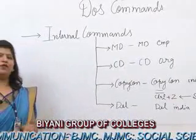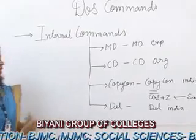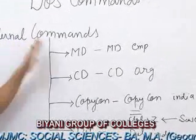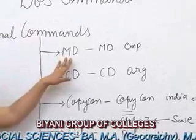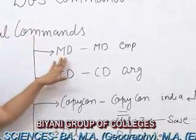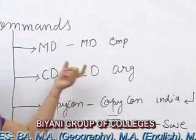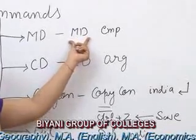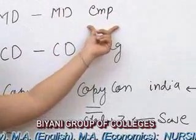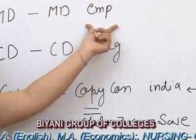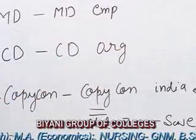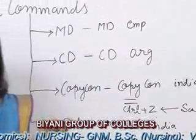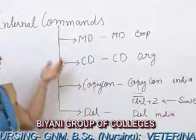Let us now understand what the internal commands are in depth. The first command is MD. MD stands for Make Directory command. To write this command, first of all you write MD and then you give the name of the directory. The word 'directory' refers to the folder which we use in Windows operating system.